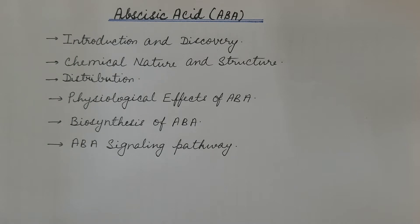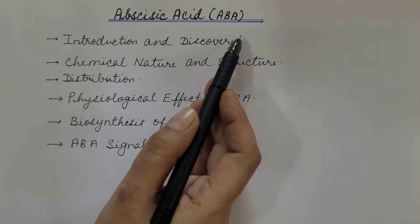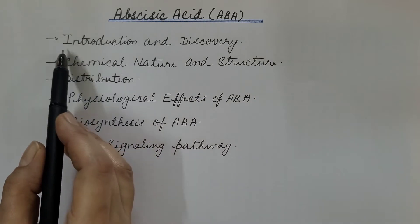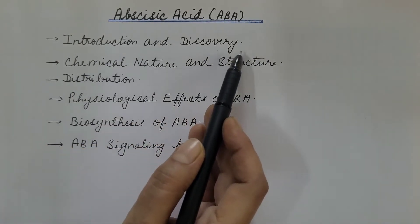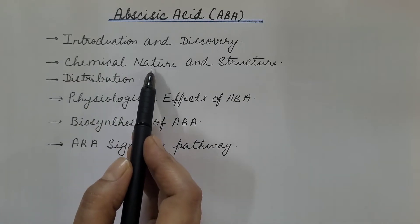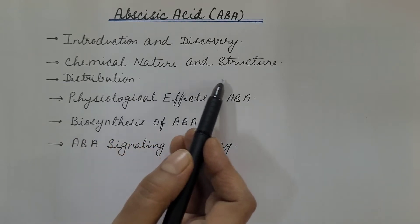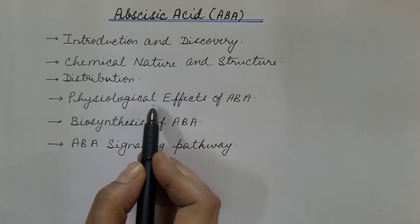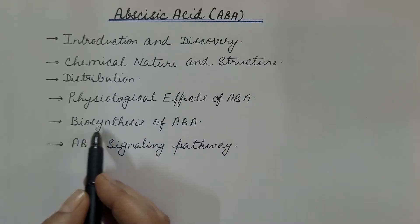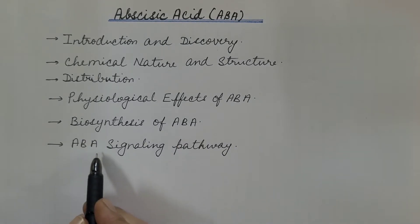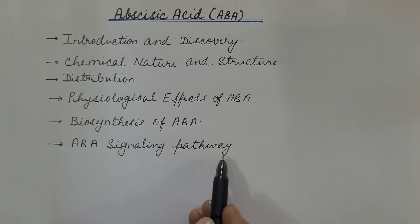Hello friends. In the last few videos, we have discussed some plant hormones like auxins, gibberellins, and cytokinins. In this video, we will discuss about abscisic acid plant hormone. Under this, we will discuss about introduction and discovery of abscisic acid, its chemical nature and structure, distribution of abscisic acid in plants, physiological effects, biosynthesis of abscisic acid, and at last, the abscisic acid signaling pathway.